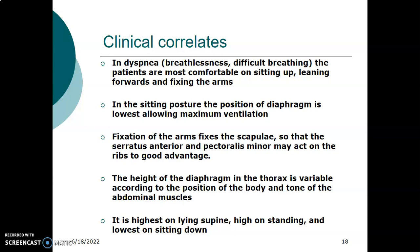Patients with dyspnea are usually comfortable when sitting up or leaning forward, and they fix their arms. In this sitting posture, the diaphragm is at its lowest position, allowing maximum ventilation compared to lying supine. Patients who are breathless prefer to sit up, lean forward, and fix their arms because fixing the arms fixes the scapula, allowing serratus anterior and pectoralis minor to act on the ribs to good advantage, helping them use the accessory muscles of respiration.